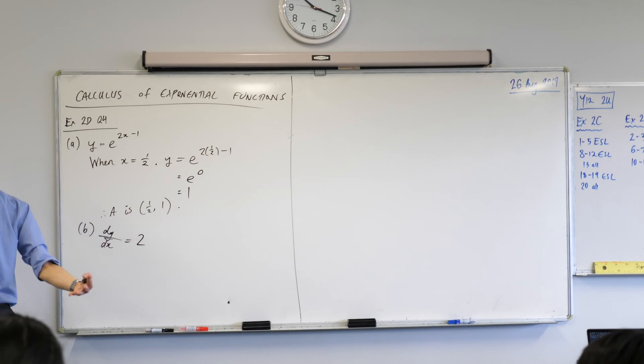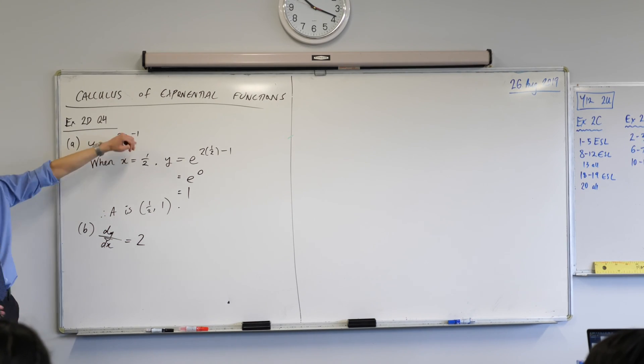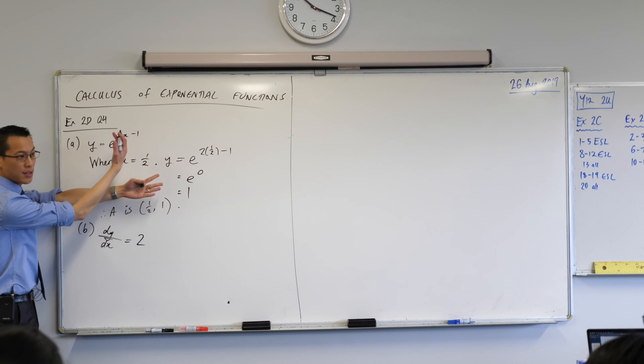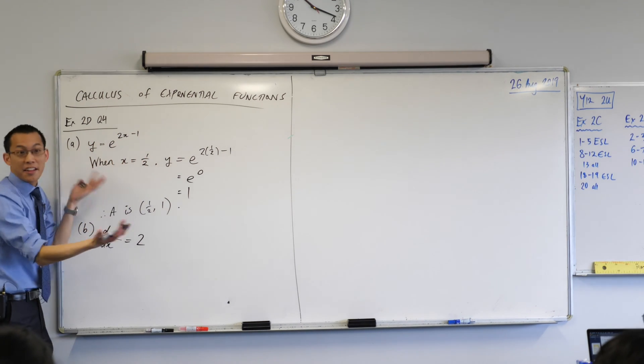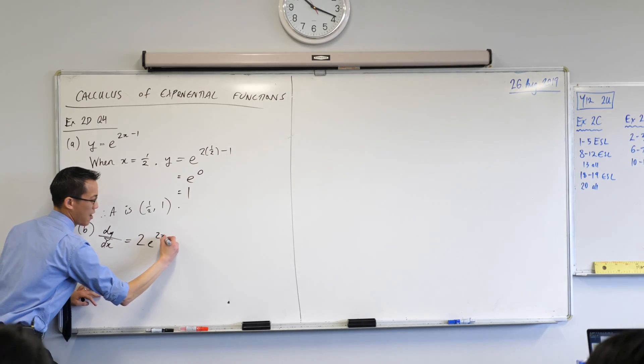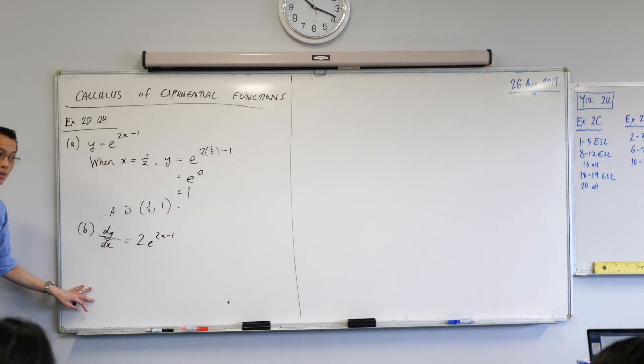And then I move on to the rest of it. So the outside function is e to the power of some stuff. What happens when we differentiate e to the power of some stuff? Yeah, nothing happens to it. It's e to the power of that stuff. There we go. There's my derivative.